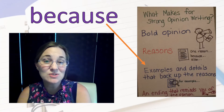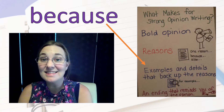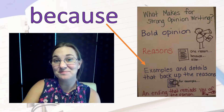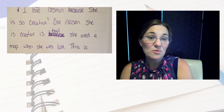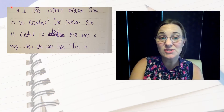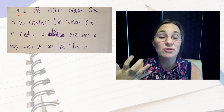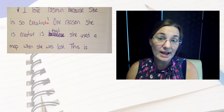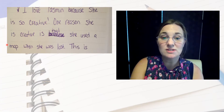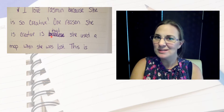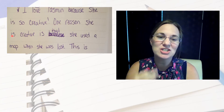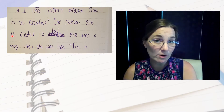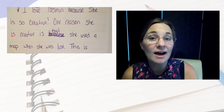I'm going to show you how I use the word "because" to help support the reason that I think Yasmin is a very creative character. This is a photograph of the letter that I started yesterday, when I wanted to talk about Yasmin being so creative. And so I started with this opinion: "I love Yasmin because she is so creative." I went on to share one of the reasons why I think she's creative: "One reason she is creative is that she used a map when she was lost." I'm sorry about the scratch marks, but sometimes I get to writing and my hand doesn't exactly do what my brain wants it to do, so I just scratch it out and start over. But now I want to say more about that reason, and I'm going to use the word "because" to help me with that.